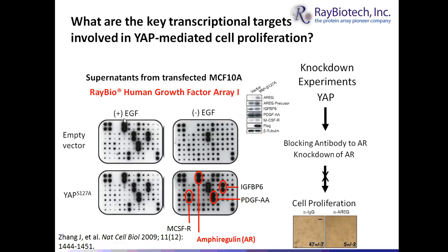These transfections were done either in the presence or the absence of epidermal growth factor. There is no significant change between the empty vector control and the presence of EGF or with the constitutively active control. But in the absence of EGF, there is a vast upregulation of various growth factors present in the constitutively active YAP transfected experiment, confirming a change in biomarker expression in the MCF10A cell line.